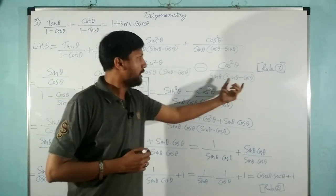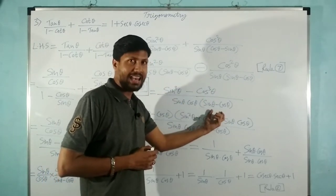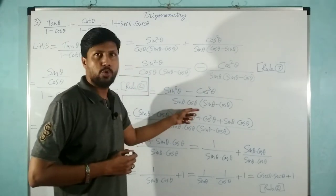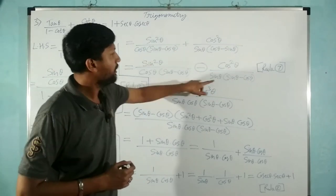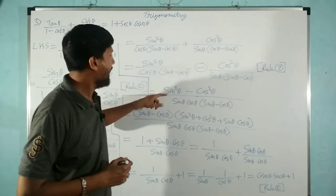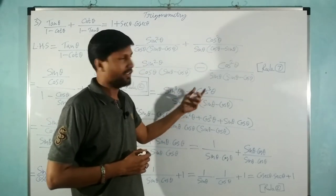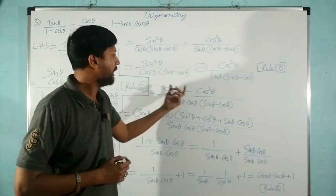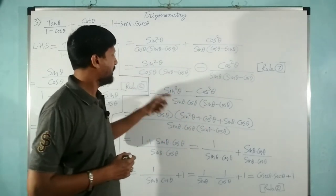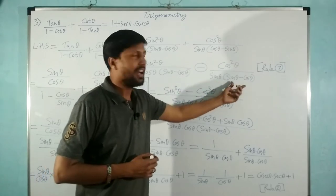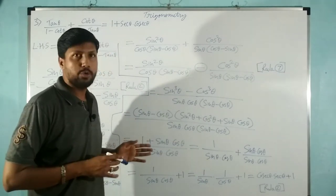Since these two brackets are the same, we take them only once. We write cos θ · sin θ in the denominator. In the numerator, multiplying through gives sin θ · sin² θ = sin³ θ, and cos θ multiplied through gives cos³ θ. The rest cancels, leaving sin³ θ - cos³ θ in the numerator, with sin θ · cos θ · (sin θ - cos θ) in the denominator.